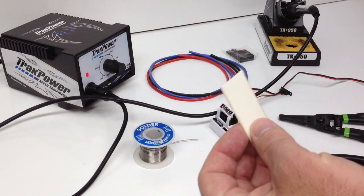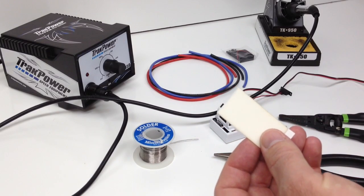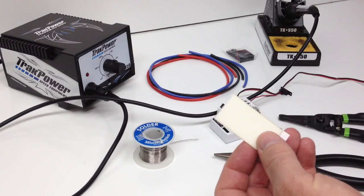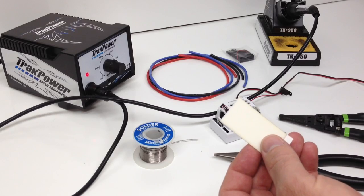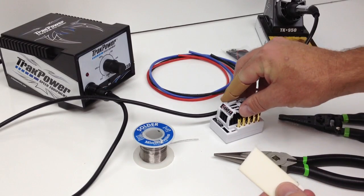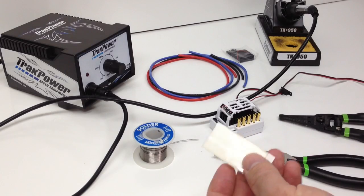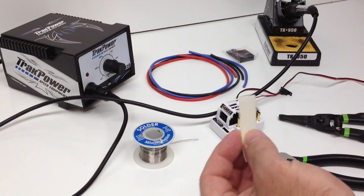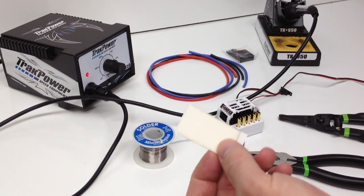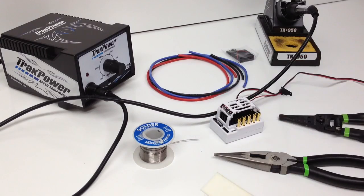Some servo tape, and this is not only to hold the RX-8 in your vehicle, but I use it to actually hold it here to the workstation just so it won't move on me. I use Parma tape when I actually put it in the vehicle, so this is just stuff that I have left over from other kits that I use to stick it down to the table here.